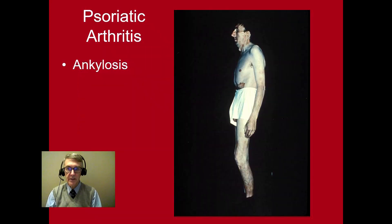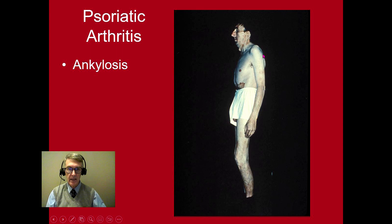This shows the ankylosing spondylitis type picture that can occur with psoriatic arthritis. This gentleman has fixation of the dorsal and lumbar spine, with no loss of lumbar lordosis — if we bent him over we'd see that he doesn't lose lumbar lordosis reaching down to touch his toes. In addition, there is a psoriiform plaque on his abdomen.